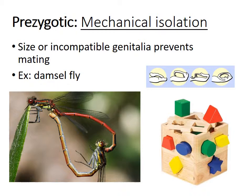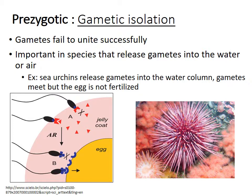Mechanical isolation is when size or incompatible genitalia prevent mating — if the parts do not fit they cannot mate. The damselfly is an example; the picture shows different damselfly genitalia that can be very different. Gametic isolation is another prezygotic mechanism where gametes do not unite successfully. This is important for species that release gametes into water or air. In sea urchins, gametes meet in the water column but the egg is not fertilized because there's no correct receptor on the sperm for the wrong species' egg.